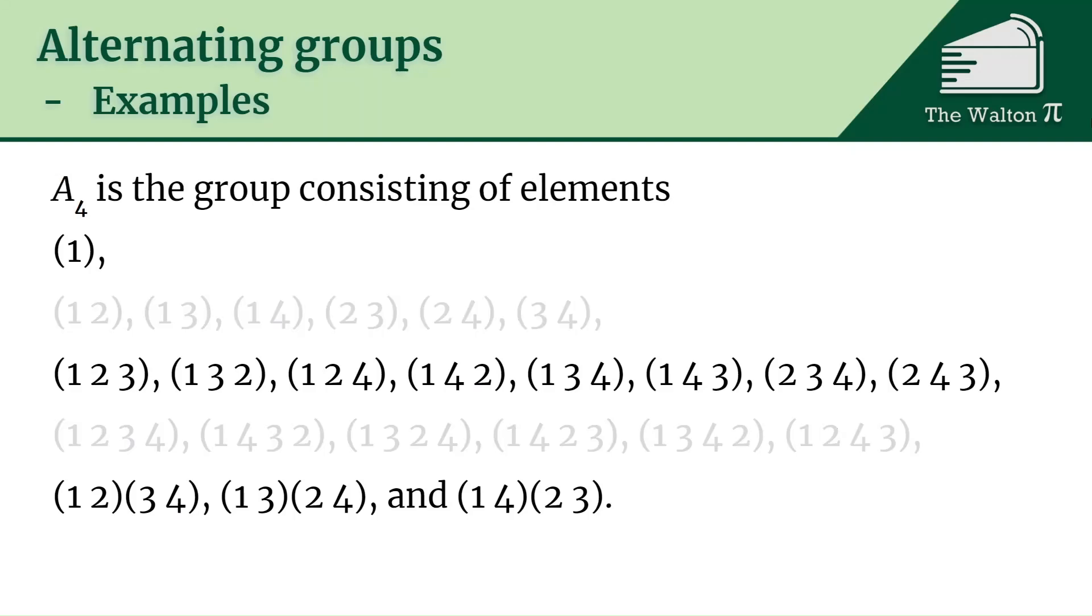But then if we look at A_4, it doesn't include all of those things. These happen to be the elements that are products of two transpositions or the identity. And so these are going to be the elements in A_4.